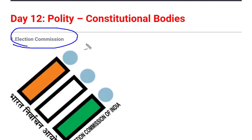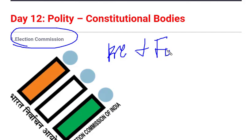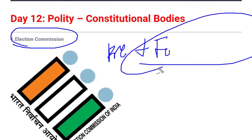Our country is a democratic country, so free and fair elections are required. 'Free' means you don't have to pay any charge for casting your vote — you just go and click a button for whomever you want as your leader. 'Fair' is very important because if elections are not fair, the leaders will not be chosen as we want. For conducting free and fair elections, we needed a body — that is the Election Commission.